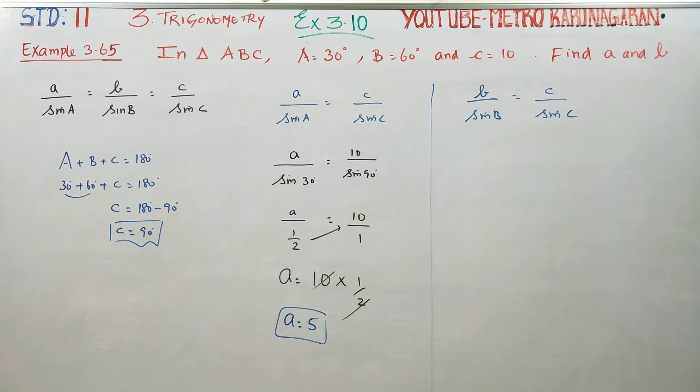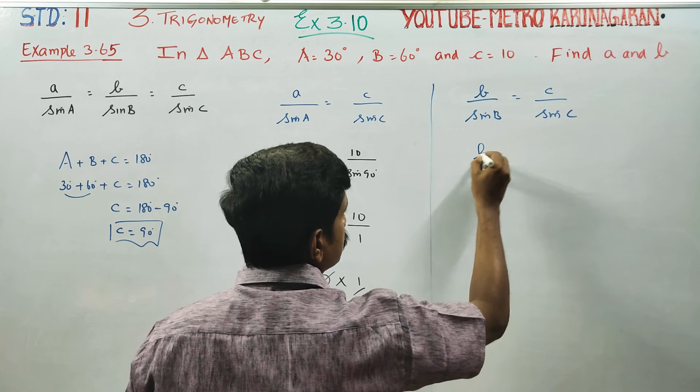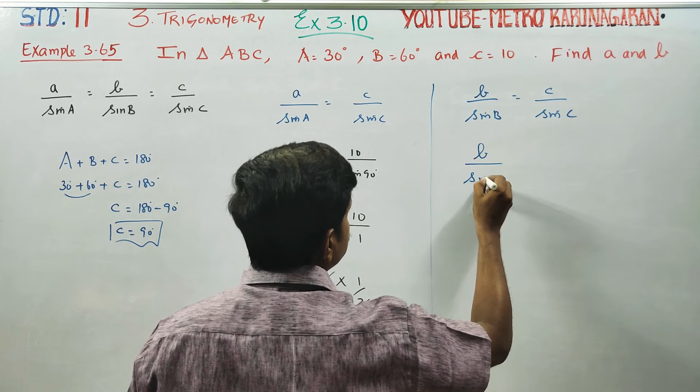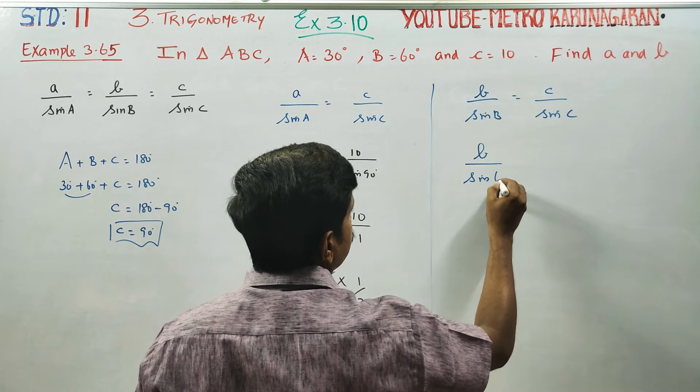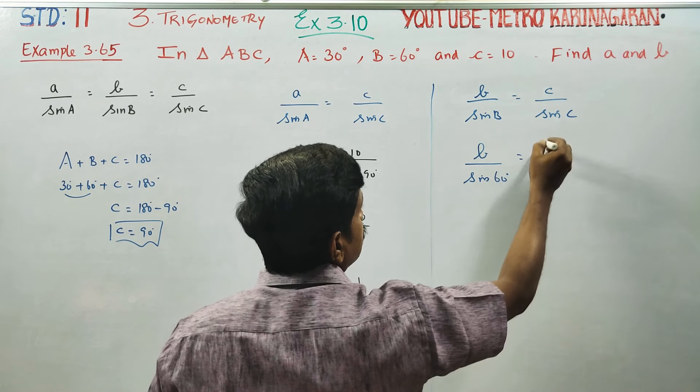Now for the second answer. b/sin B, what is B? B is 60°. And c is 10.